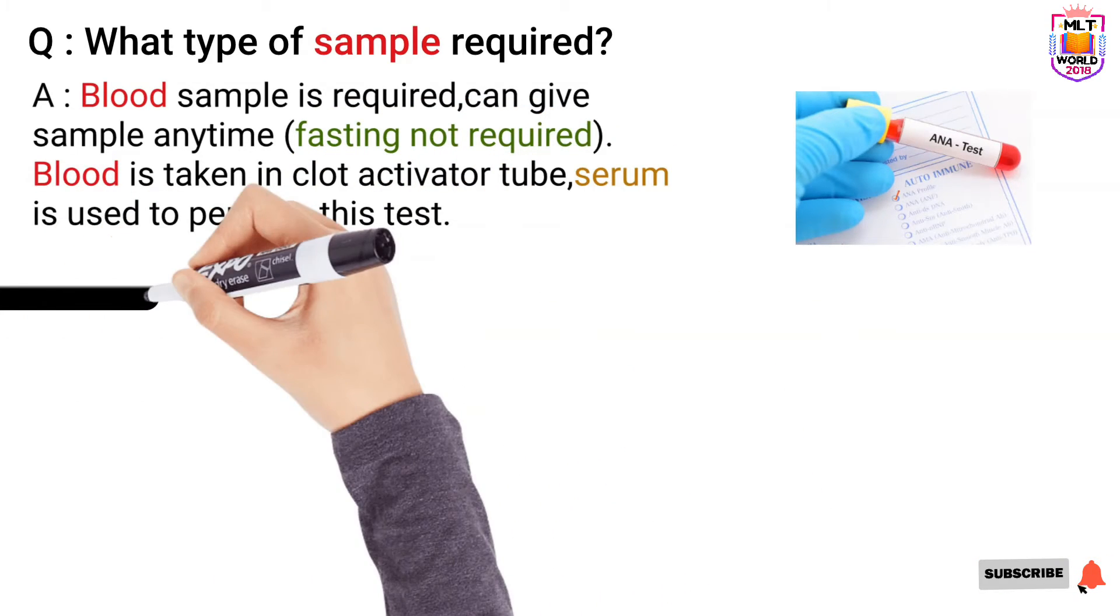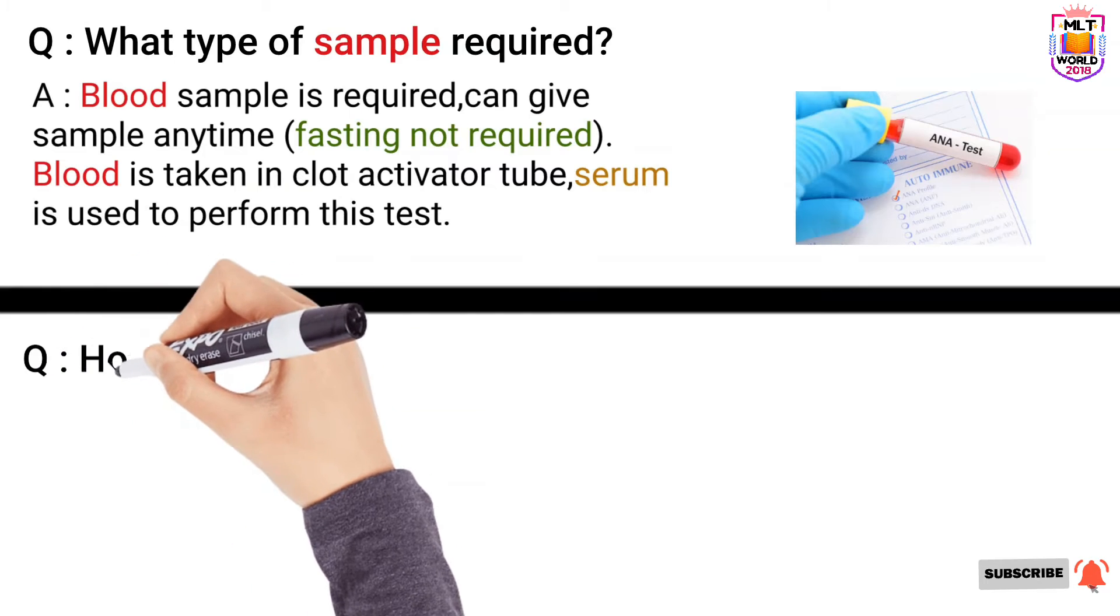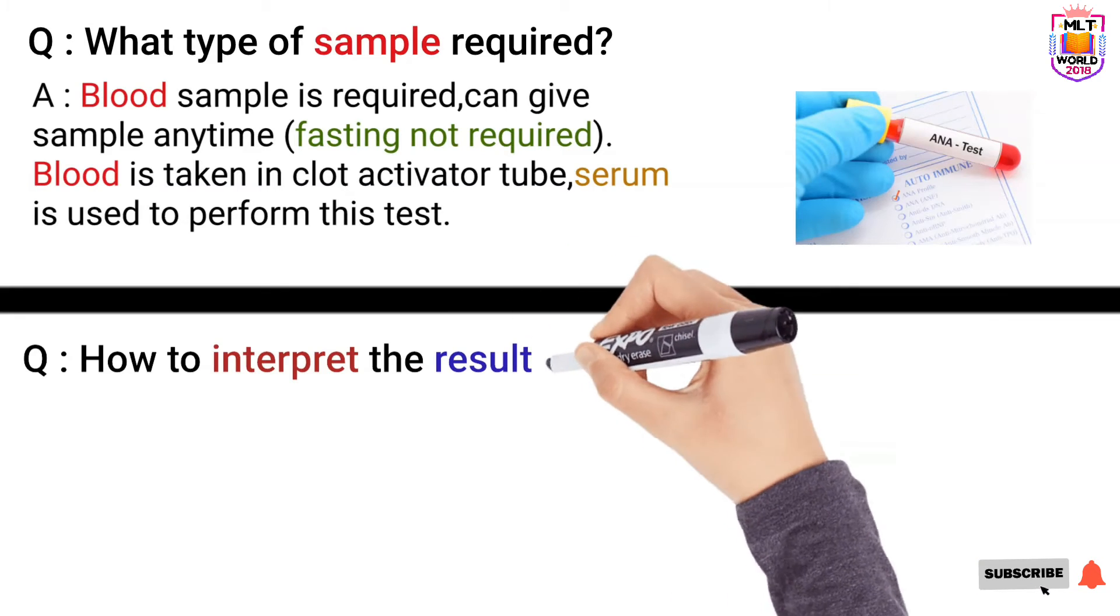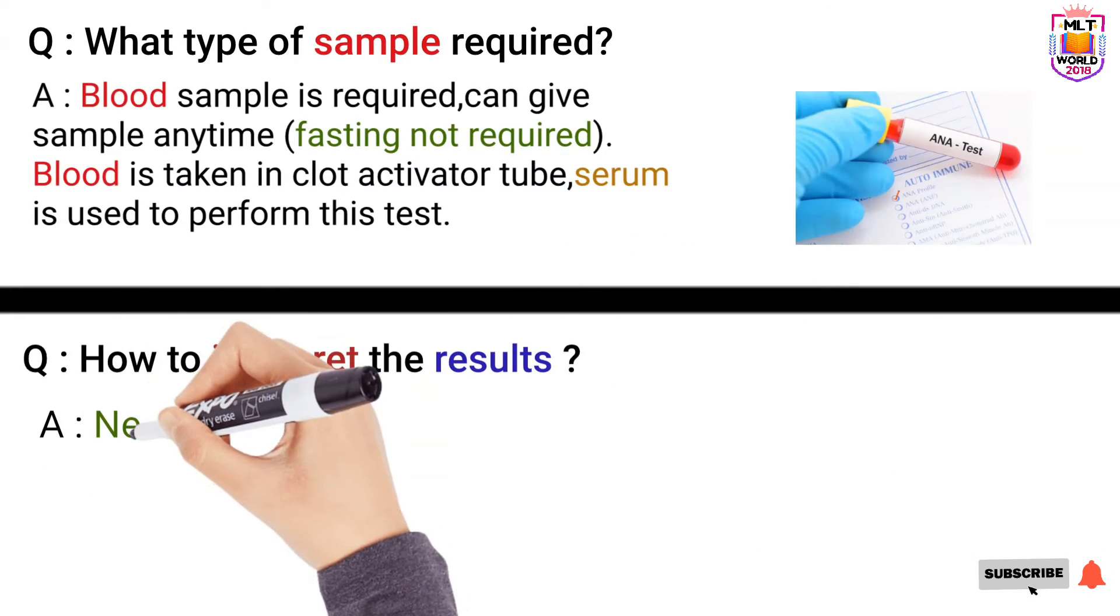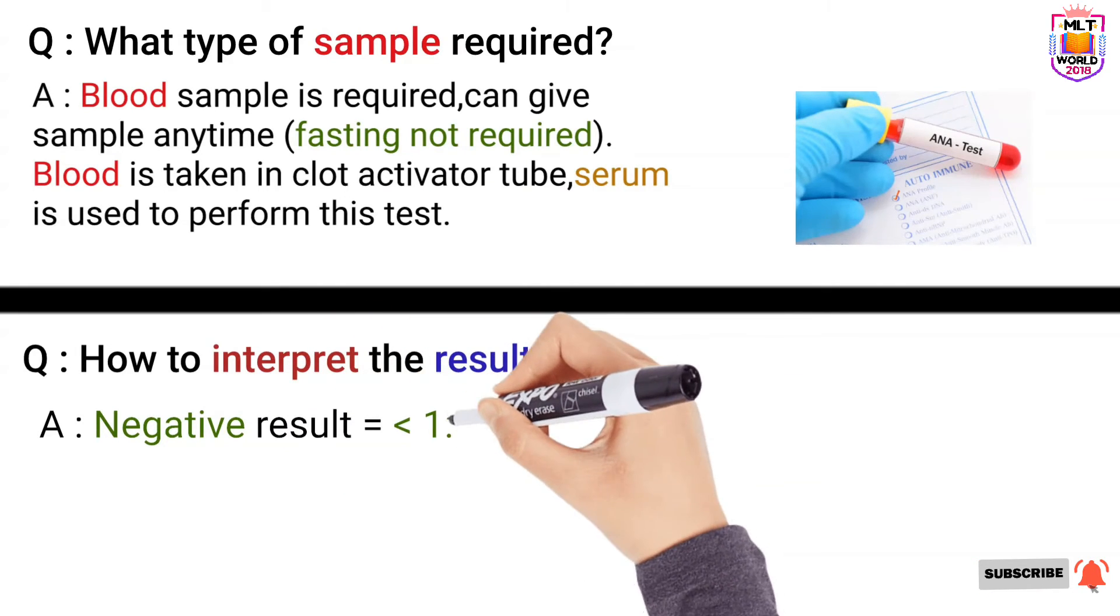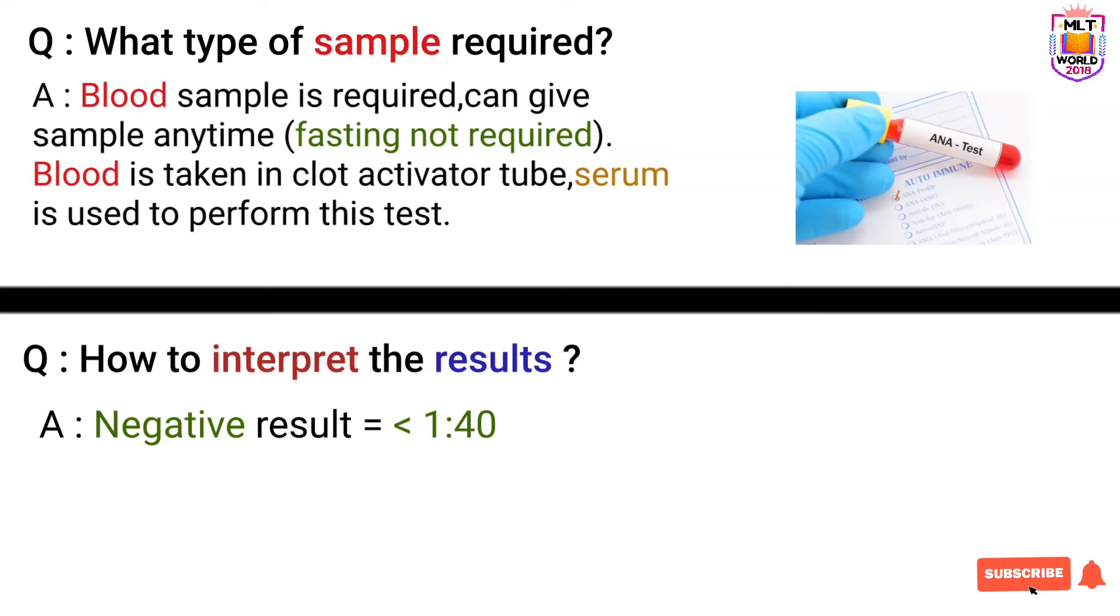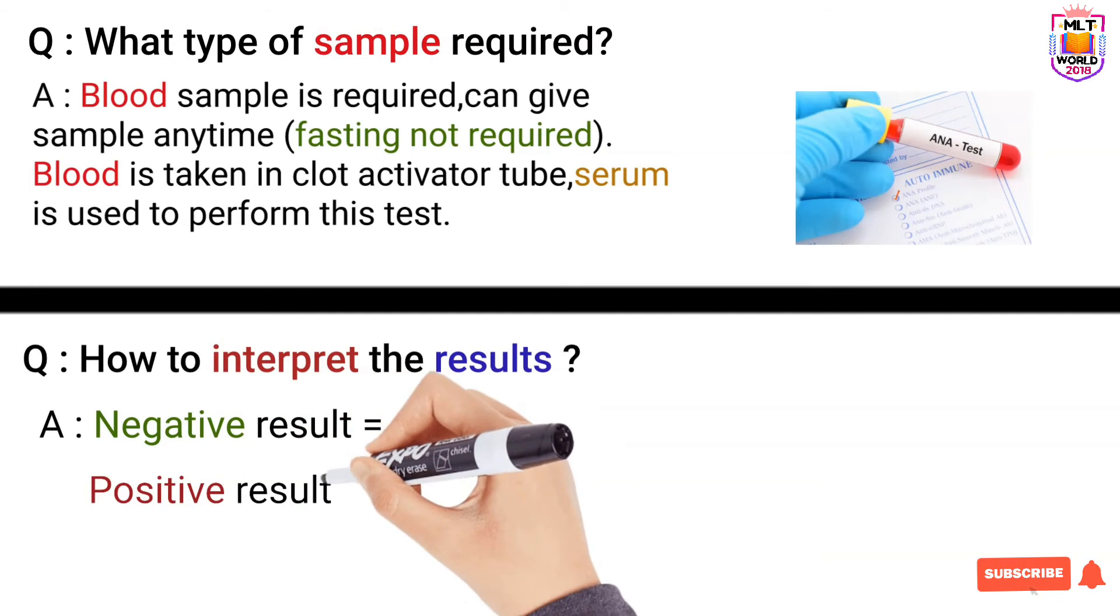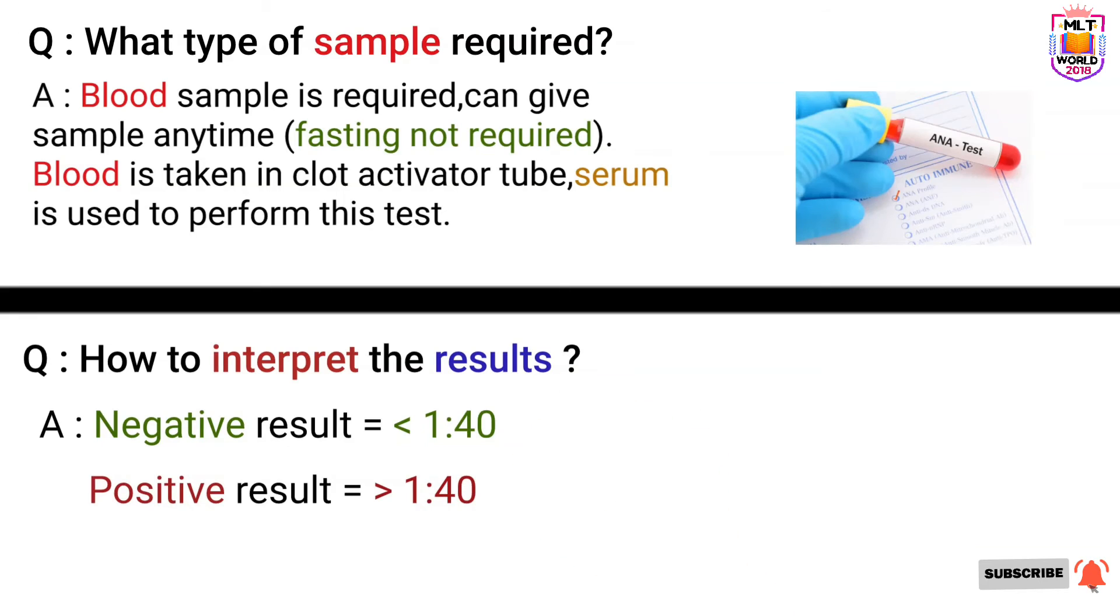So next and at the end we have to understand the results. How we will interpret the results of ANA test? If ANA test is negative it will show value less than 1:40. So if result shows less than 1:40 it means that in the blood there is absence of anti-nuclear antibodies. But if it is positive it will show more than 1:40. So more than 1:40 result means that anti-nuclear antibodies are present and that will indicate the sign of autoimmune disorder.